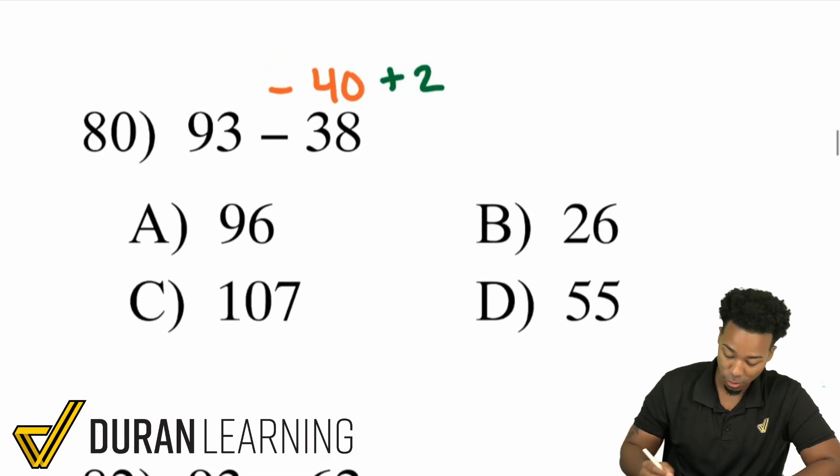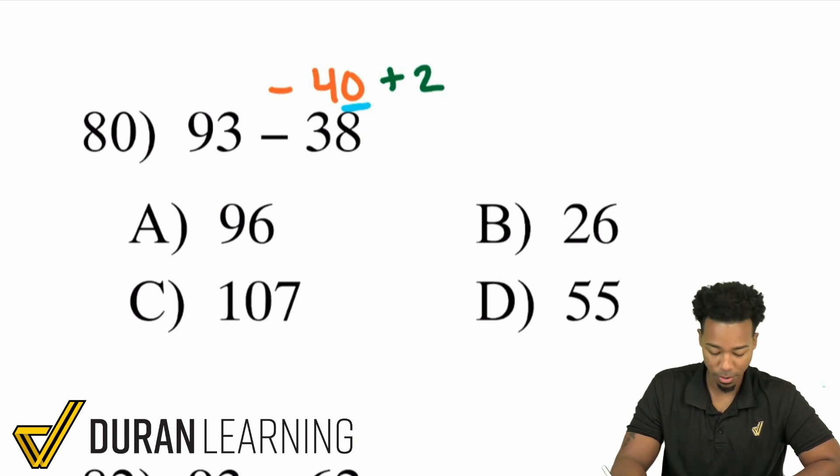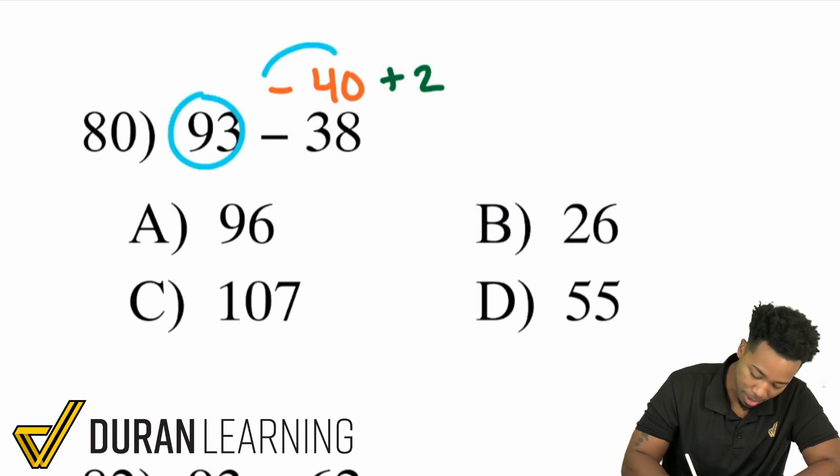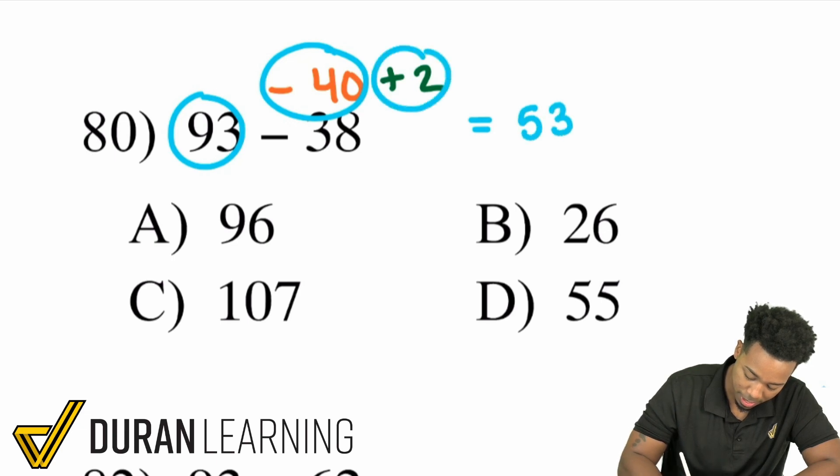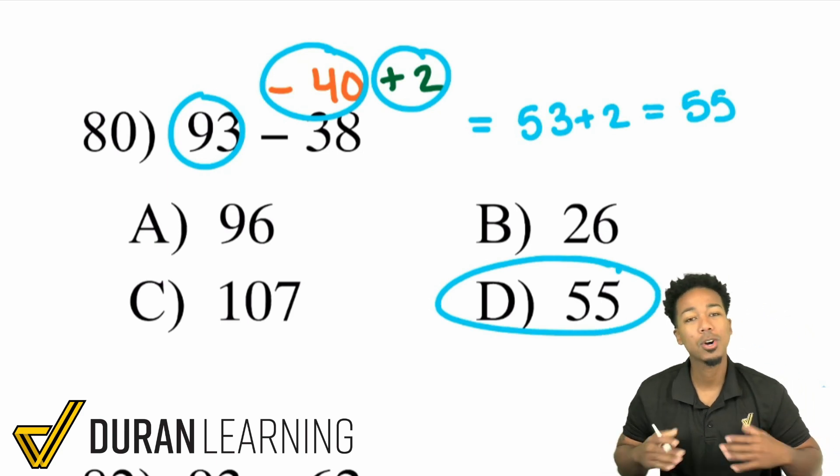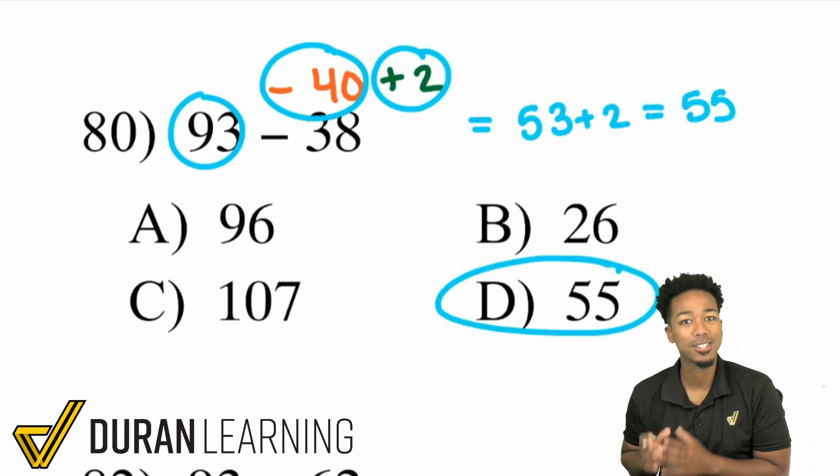So the reason that this makes it super easy is because again you're dealing with a 0 there. So 93 minus 40 that's going to end up being 53. Then 53 plus 2 in my head is 55.